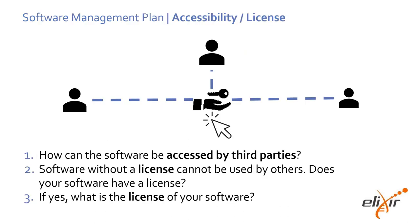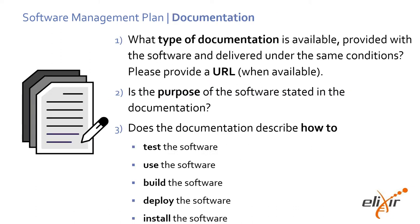The accessibility aspect covers how software can be accessed by third parties. License here is a key element. Documentation questions take into account the purpose of the software and documentation at different levels, including testing, using, building, deploying, and installing the software.